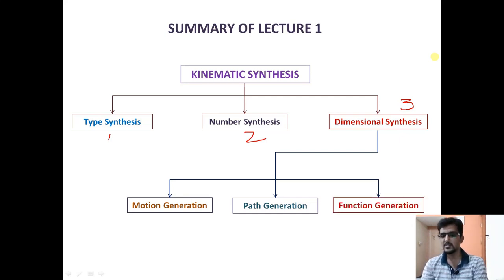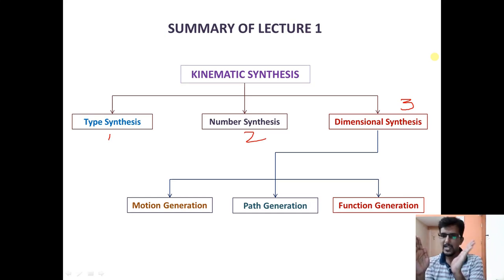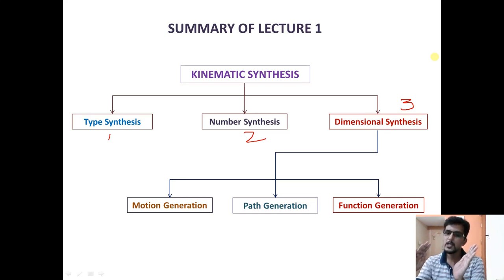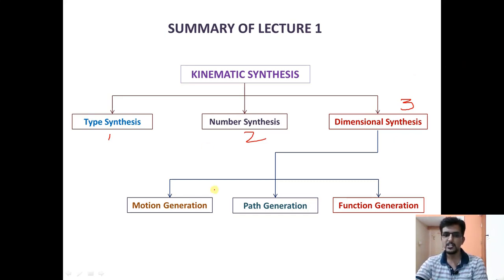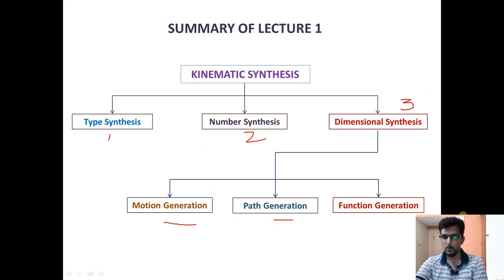The last type of dimensional synthesis is function generation. In function generation, both the input link and output link are related to each other — for example, if input moves by 10 degrees, output moves by 20 degrees, related by y = 2x. In function generation, there is a relationship between the powered input link and the following output link expressed as y = f(x), whereas in motion generation and path generation there is no such relationship.